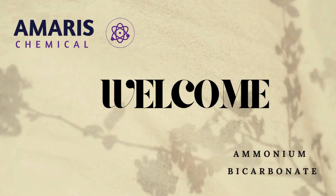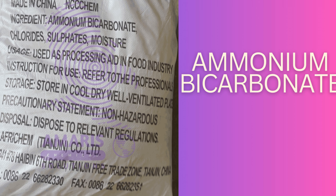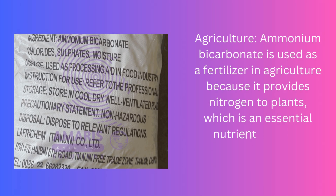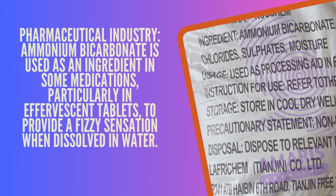Ammonium bicarbonate is a white, crystalline compound with the chemical formula NH4HCO3. It is a type of inorganic salt commonly used in the food industry as a leavening agent for baking, as well as in the production of ceramics, dyes, and other chemicals. When heated, ammonium bicarbonate decomposes into ammonia, carbon dioxide, and water vapor, which causes dough to rise and become light and fluffy. It is also known as Hartshorn or Baker's Ammonia.